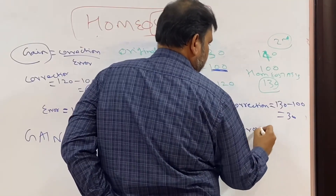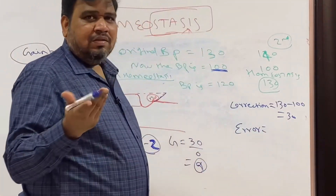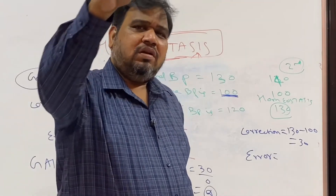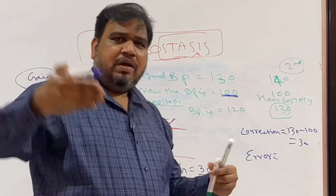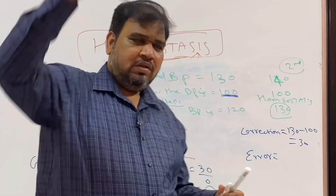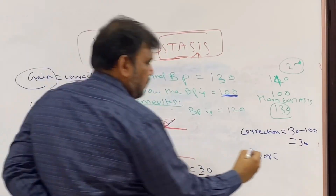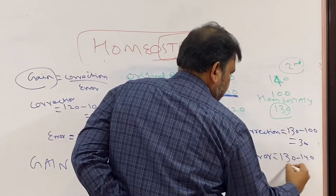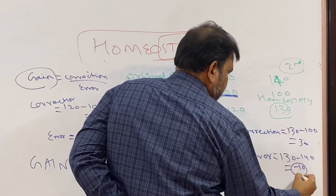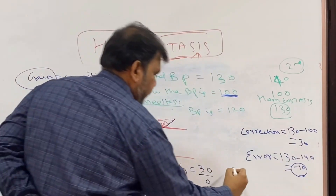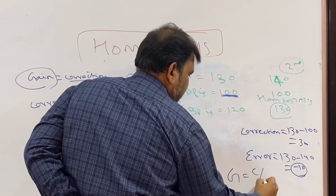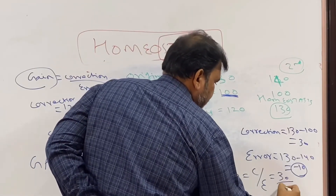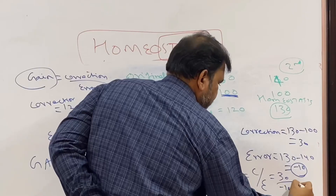Now for the error: if homeostasis had functioned perfectly, the BP should have returned to the normal value of 140. But it came only to 130. So error equals 130 minus 140, which is minus 10. Now gain equals correction divided by error: 30 divided by minus 10, which equals minus 3.